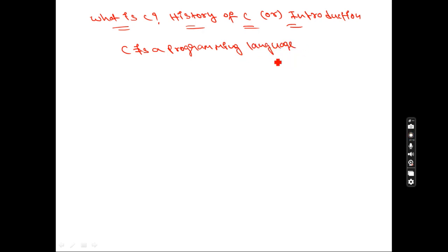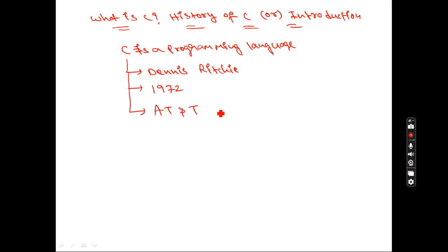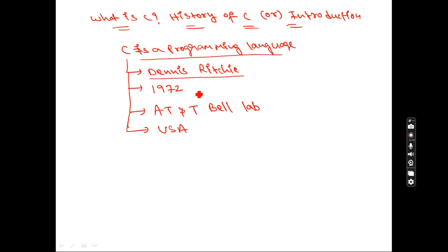C is a programming language which is developed by Dennis Ritchie in the year 1972. C language is developed at AT&T Bell Laboratories. Bell Laboratories — you may get a question about the meaning of AT&T. C is derived and developed at AT&T Bell Laboratories, which is located in USA. This is one of the famous laboratories located in America, and in this laboratory many programming languages got birth.